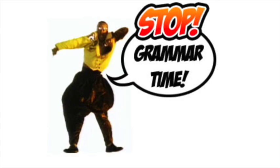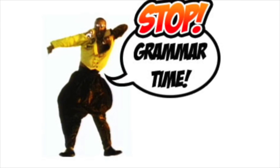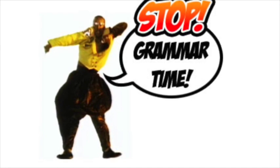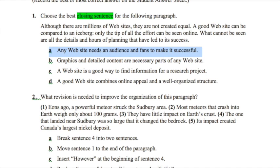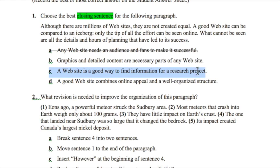The final type of multiple choice question is the grammar question. These are standalone questions — not related to any readings — about punctuation, grammar, or word choice. In this case we're asked to look for the best closing sentence for a paragraph. Pause the video to read the paragraph, then eliminate any wrong answers. Choices A and C appear to be off-topic, so they're clearly wrong. Go ahead and make the correct choice and bubble it in on the student answer key.